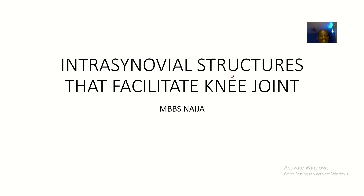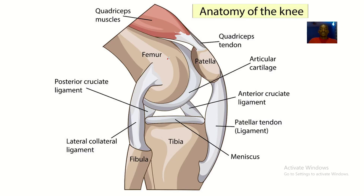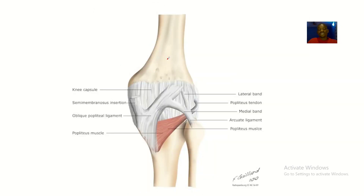We'll be talking about the structures that facilitate the knee joint — specifically the synovial structures that increase the stability of the knee joint. This is basically knee joint anatomy, covering the extra-capsular, intra-capsular, and intra-synovial structures that facilitate the knee joint.